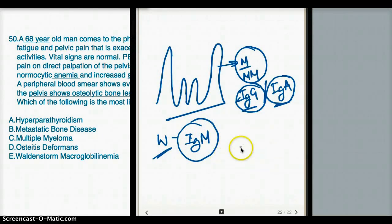Another thing we're going to see in multiple myeloma is we're going to see that plasma cells have a clock face chromatin. It's going to look like a clock.